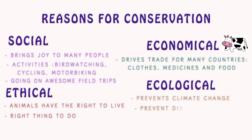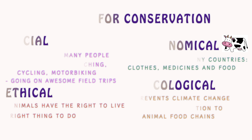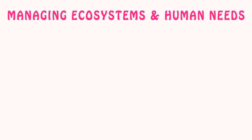Conservation of ecosystems can also prevent the disruption of food chains. The 2015 OCR specification requires you to know how we are balancing between managing ecosystems and human needs, in these three examples.